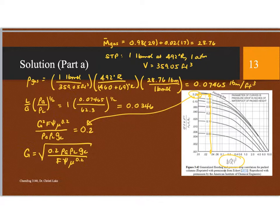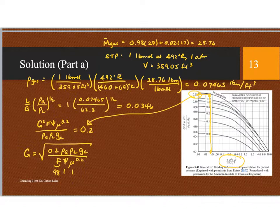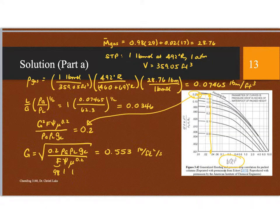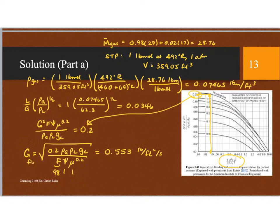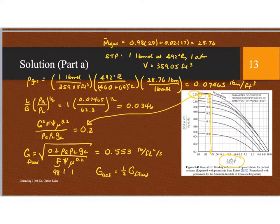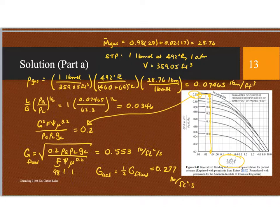Psi, in this case is 1, and the viscosity is also 1. These units are the standard units for English units, and the G becomes 0.553 pounds per square foot per second. Now this is the G at flooding. I want half of this, so the G actual is half of that, so 0.277 pounds per foot square per second. All right, so that gets me the G value that I'm using.